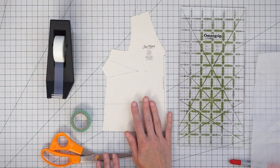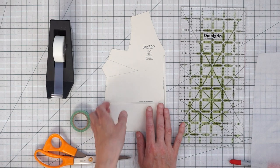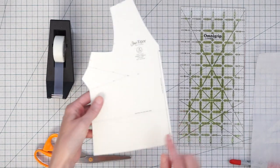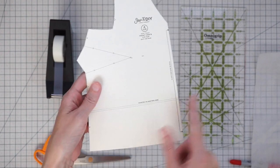For this example I'm using my Neary tank top pattern and this pattern comes with a lengthen and shorten line already on it.